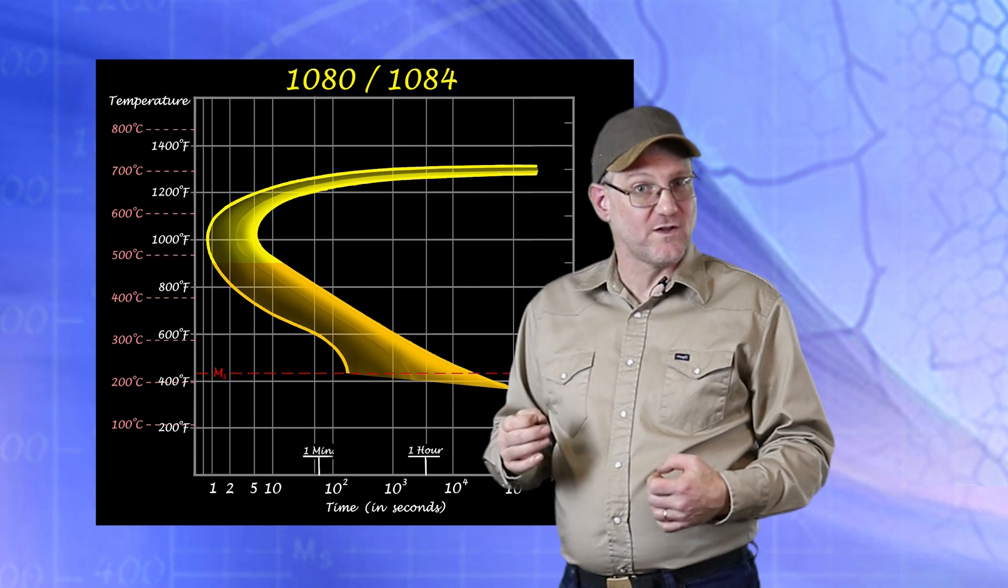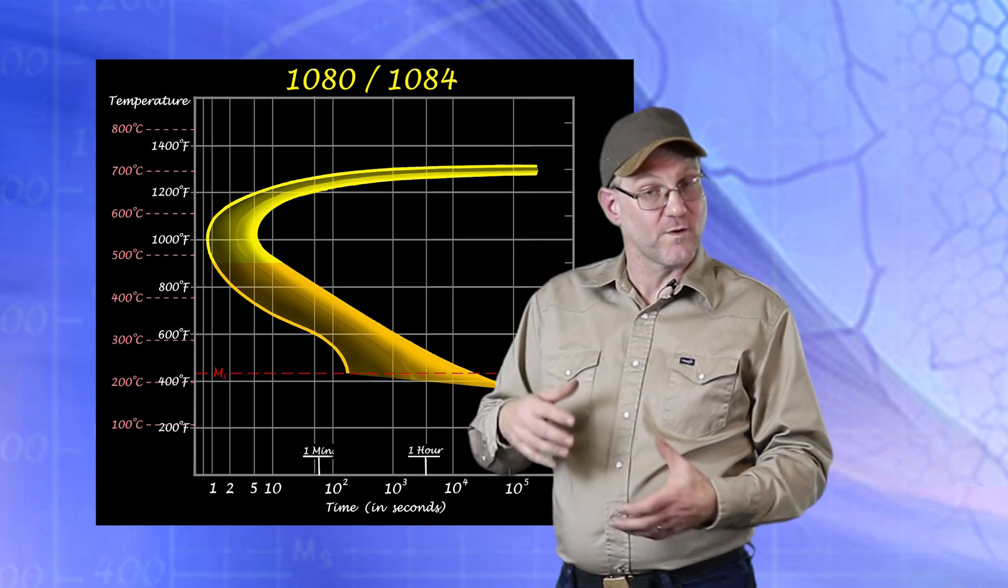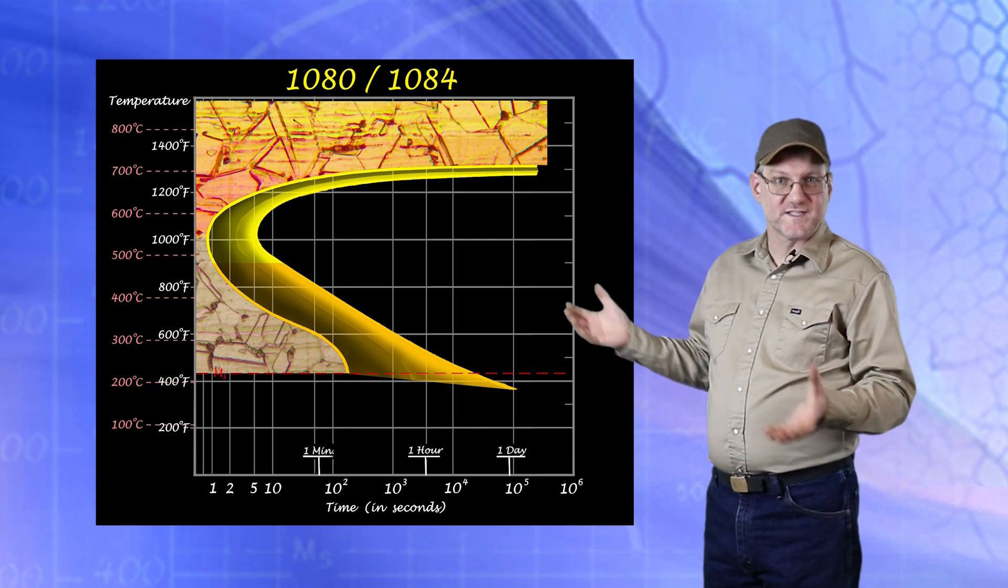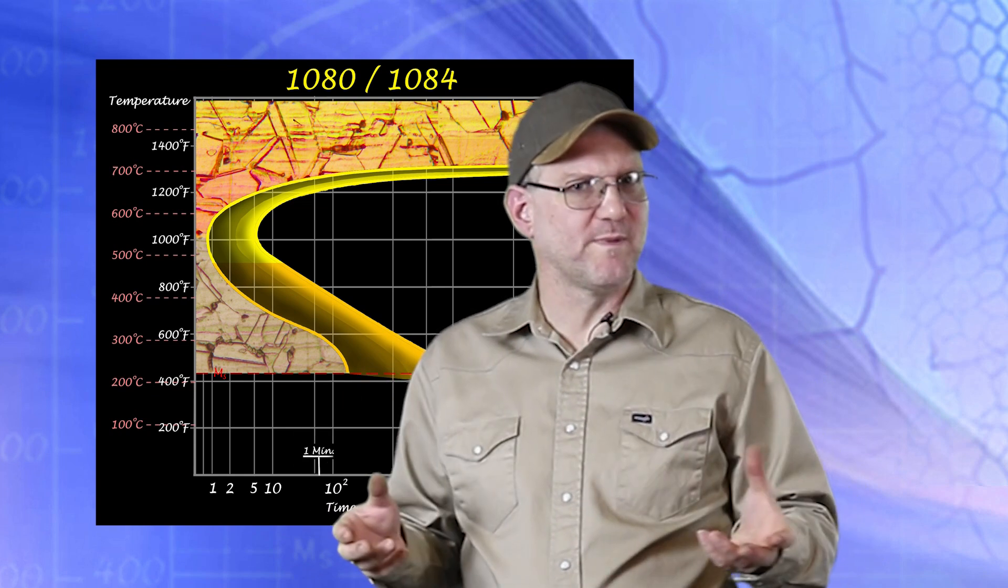The first and obvious zone on the diagram shows us when the steel is fully austenitic. Now you are probably wondering why this zone includes so much area below the normal A1 temperature.